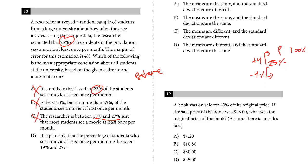It is plausible that the percentage of students who see a movie at least once per month is between 19 and 27%, perfect choice. Another word they use is plausible or likely. These are both words you should be looking for to make conclusions, but never always or never or most. They're just too extreme.